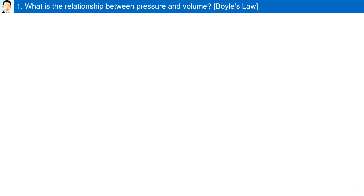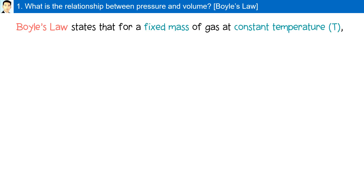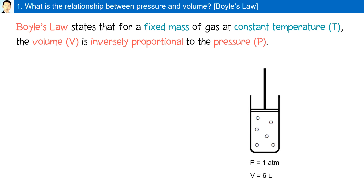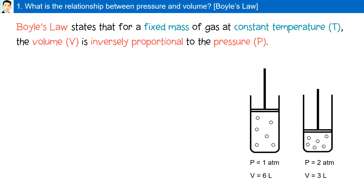What is the relationship between pressure and volume? Boyle's law states that for a fixed mass or amount of gas at constant temperature, the volume is inversely proportional to the pressure. For example, at one atmosphere and six liters, if you were to double the pressure to two atmospheres, the volume will halve to three liters. P1 V1 is equal to P2 V2.